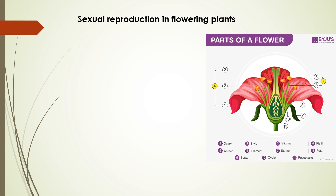Before going to the process, we have to know the structure of a flower. In this diagram, you can see the three or four main parts of the flower. Out of four, two are known as accessory parts and two are known as reproductive parts. The accessory parts are the calyx and corolla — commonly called sepals and petals. The reproductive parts are the carpel and the stamen.